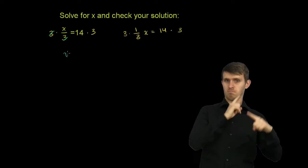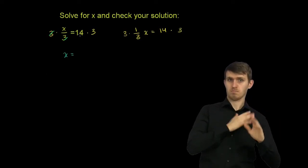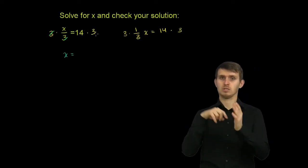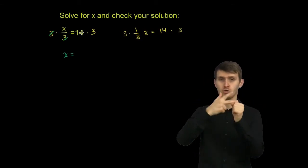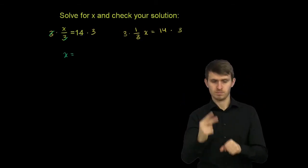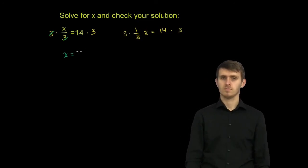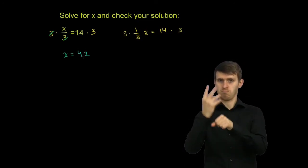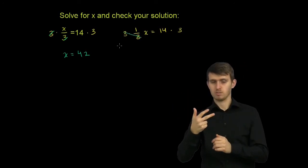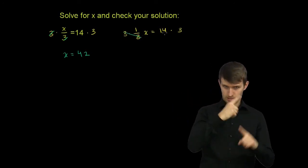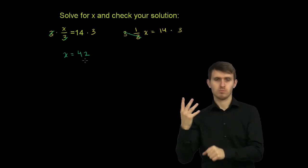And on the right-hand side, what's 14 times 3? 3 times 10 is 30. 3 times 4 is 12. So it's going to be 42. So we get x is equal to 42. And the same thing would happen here. 3 times 1/3 is just 1. So you get 1x is equal to 14 times 3, which is 42.